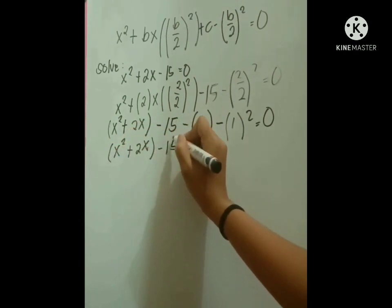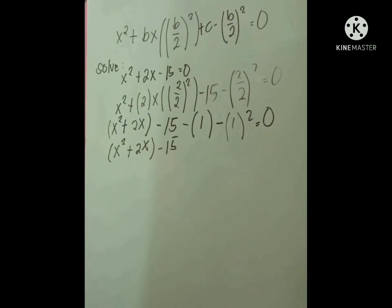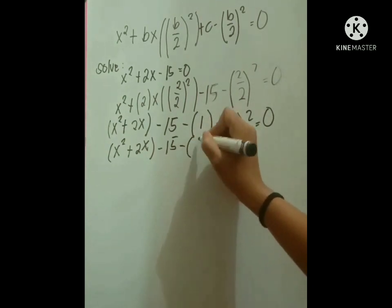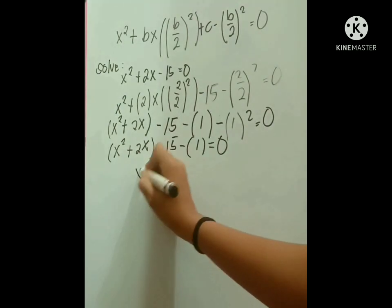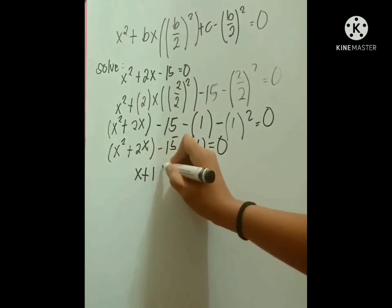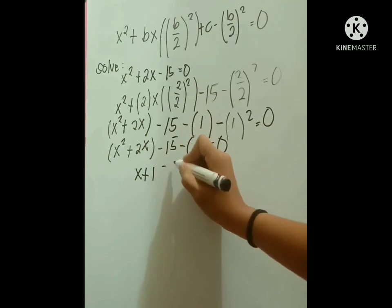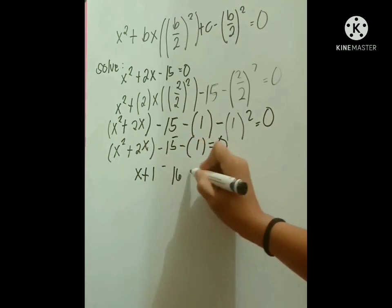And how do we get what is inside? Simply we just need to get the square root of our a and c. Therefore, the square root of x squared is x and the square root of 1 is 1. That is why we can get x plus 1 minus 16 equals 0.